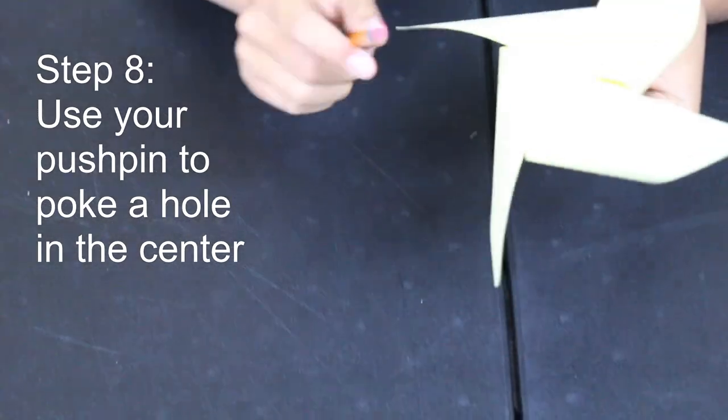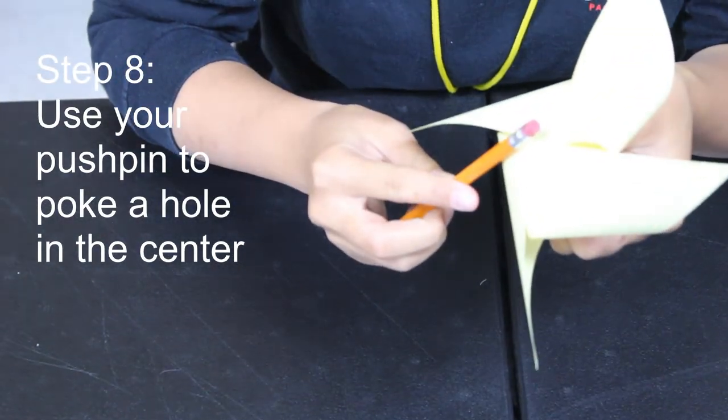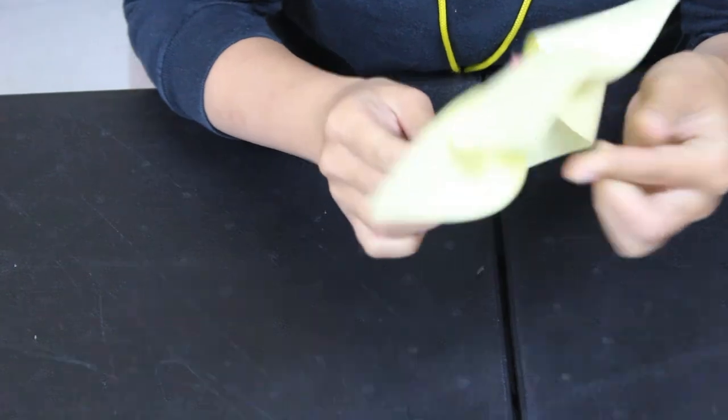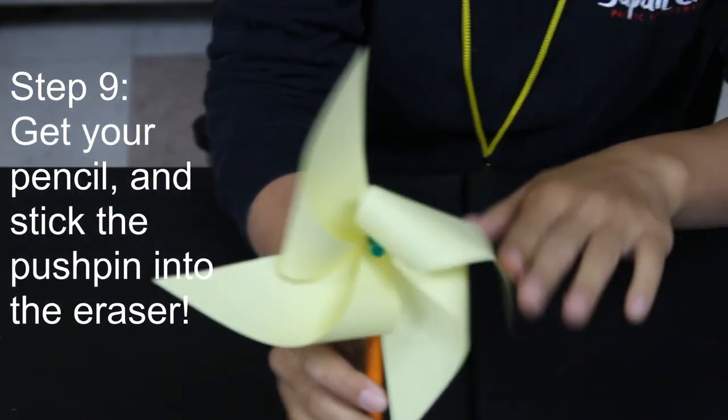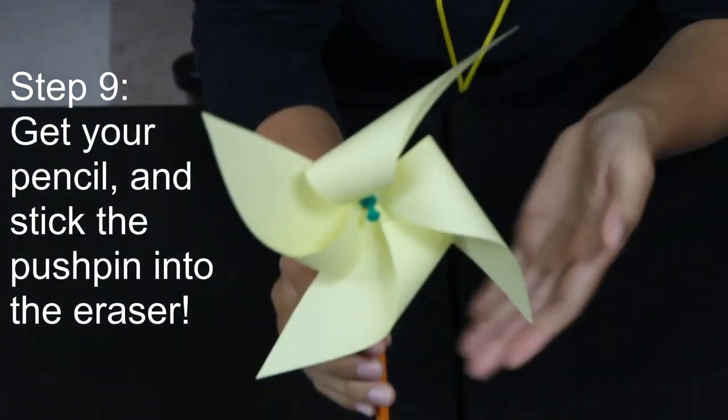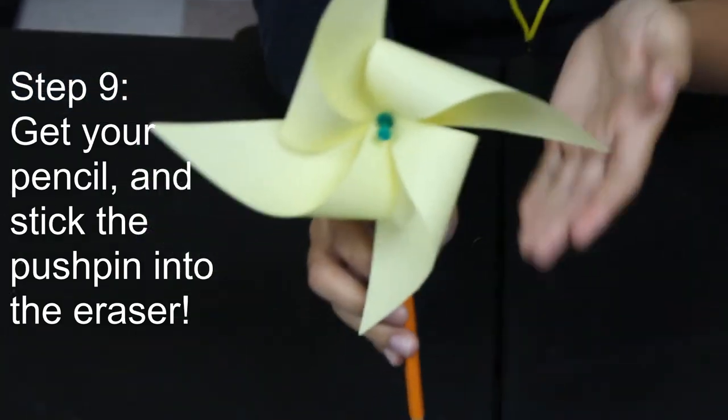Then we're going to take our pencil and push the sharp end of that push pin into the eraser, into the side of the eraser not on top but the side. So it should look something like that. And now you can watch it spin.